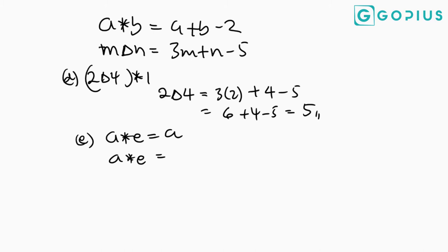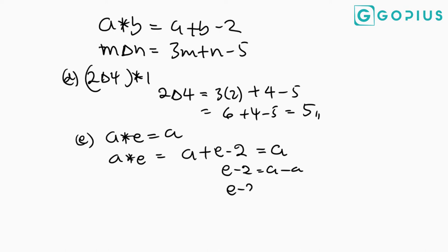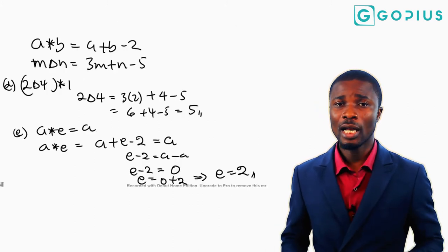Setting a plus e minus 2 equal to a, we get e minus 2 equals a minus a, which is 0. So e minus 2 equals 0, meaning e equals 2. Therefore, as far as the star operation is concerned, 2 is the identity element.